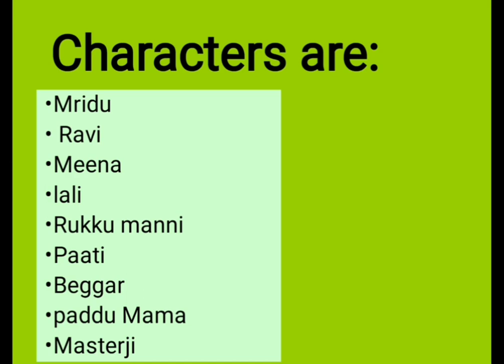The characters are: Mridu, a young girl; Ravi, Meena, and Lali — these three are cousins of Mridu; Rukumani, the aunt of Mridu; Pati, grandmother of Mridu; a beggar who visits the house of Rukumani; Padumama, brother of Rukumani; and Masterji, who comes to the house of Rukumani to teach music to Lali. These are the important characters in the lesson.